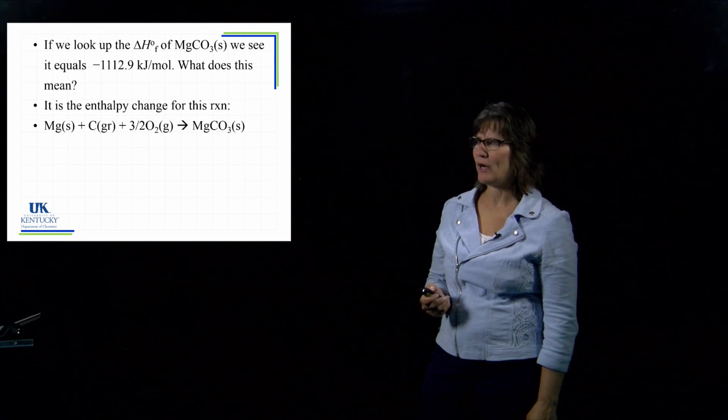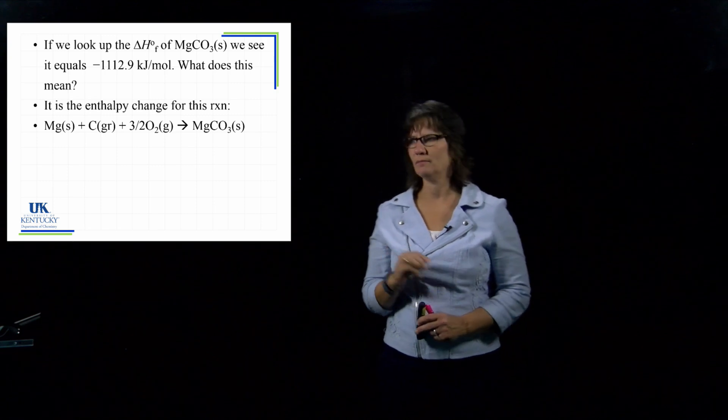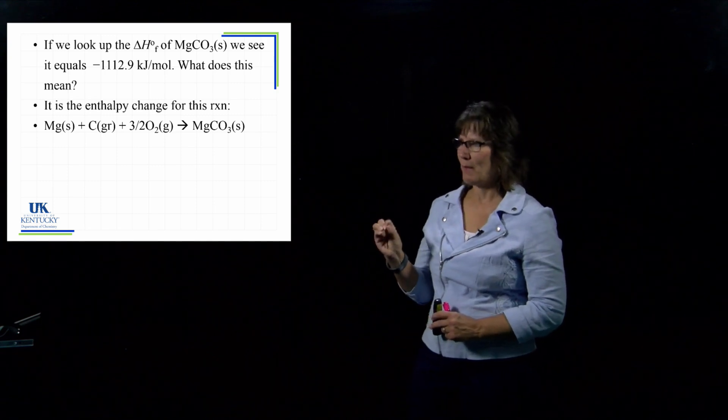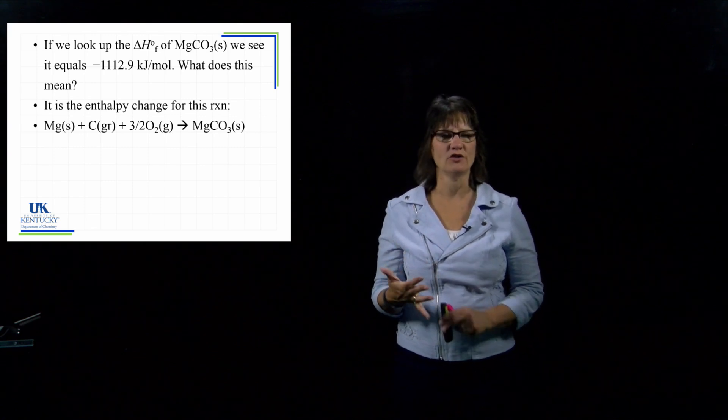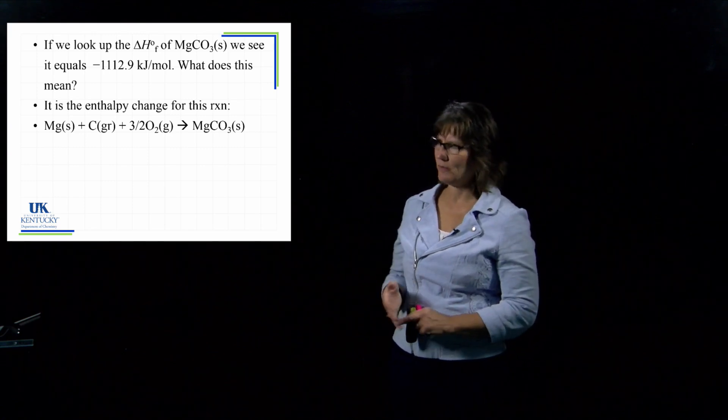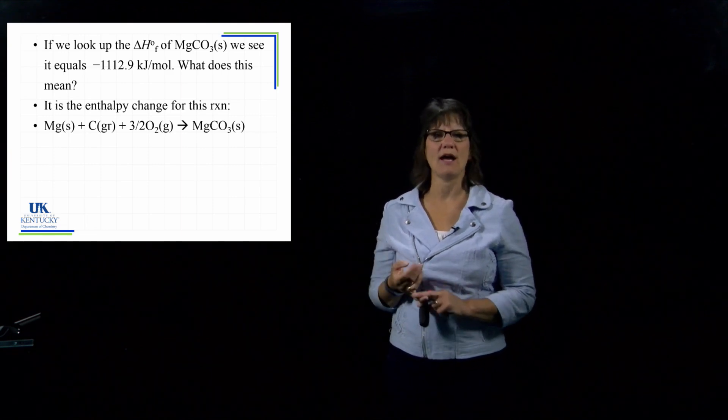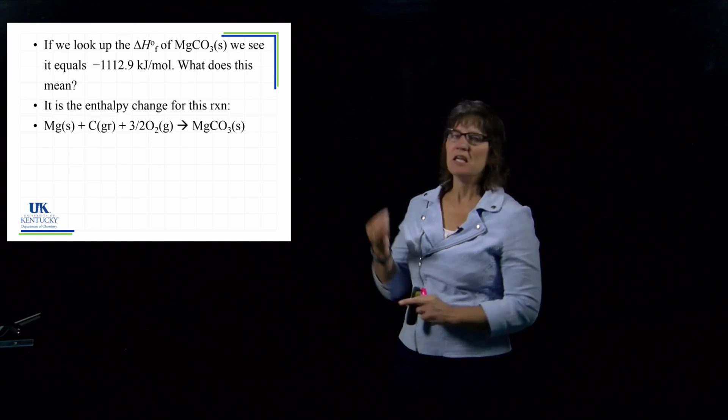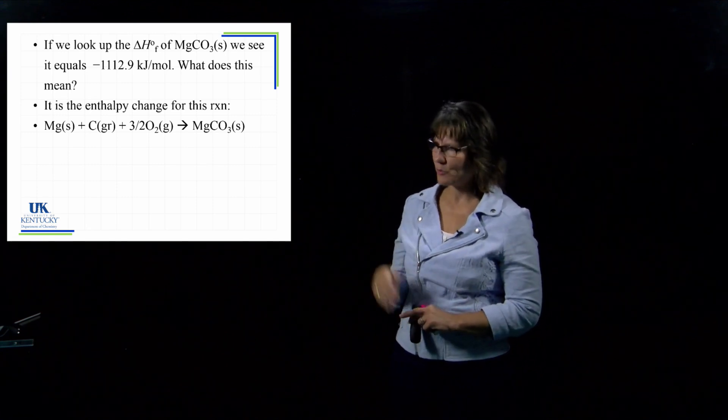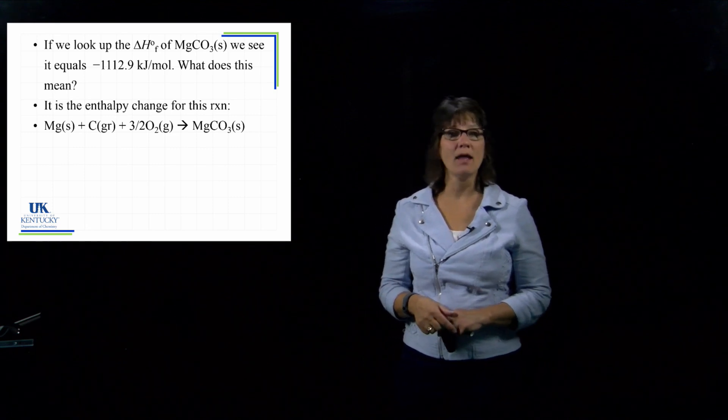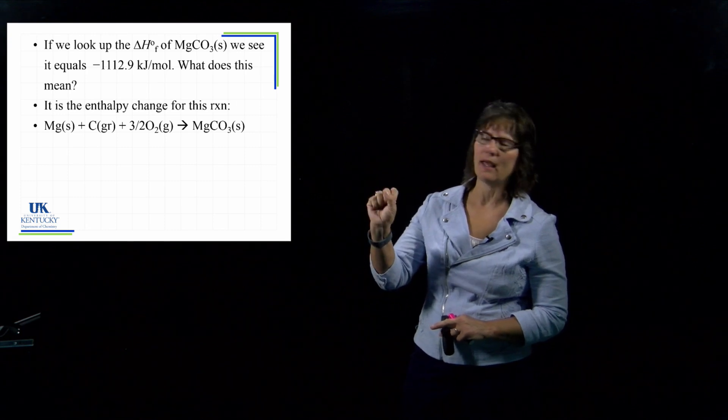So we would put that magnesium carbonate on the right hand side, and then the elements that make it up on the left hand side. See what we see there? We've got magnesium, so we write magnesium. Magnesium is a solid under standard state conditions, so we put an S after it. Carbon, the most stable form of carbon is graphite, so we put GR after it. Oxygen, it's diatomic, elemental oxygen is the most stable form. It's a gas, so we write that there. And then we balance it.